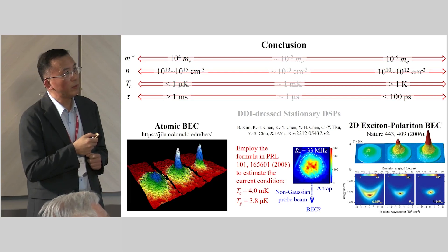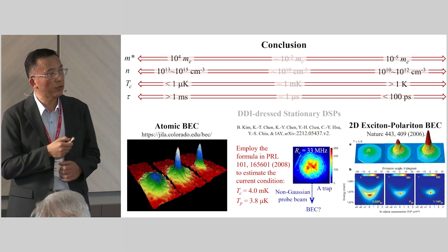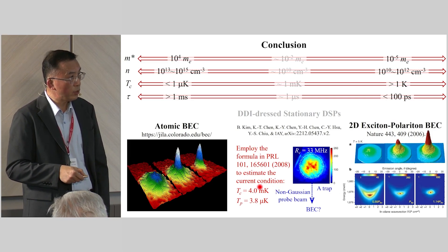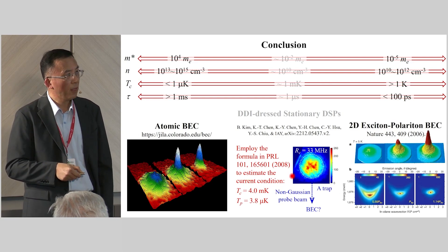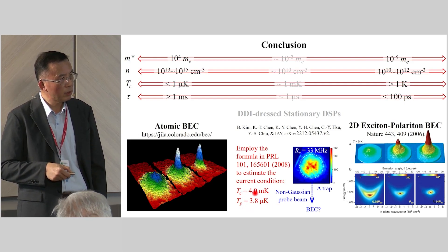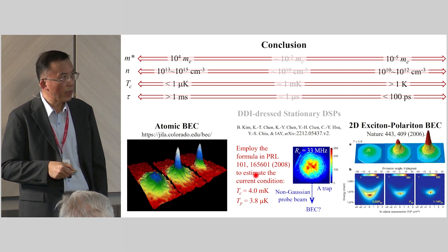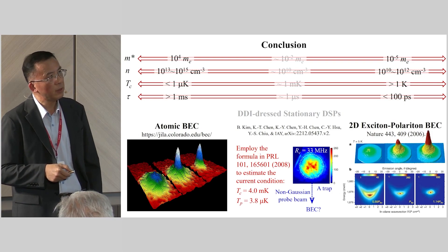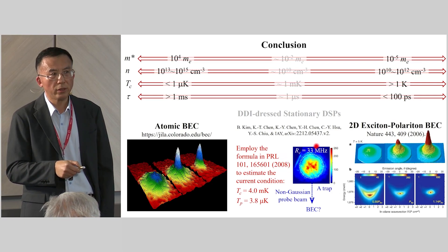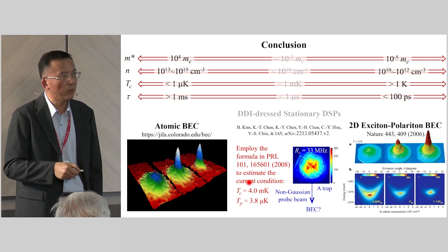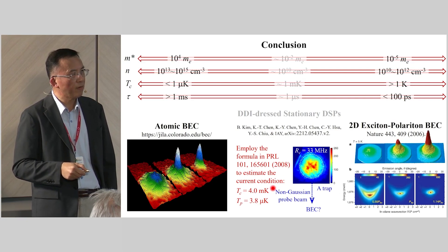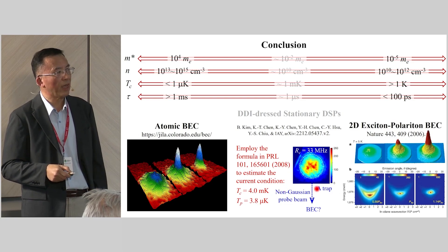Okay, conclusion. We estimate the present experimental conditions as the following. The transition temperature is about 4 millikelvin and the temperature of our stationary dark state polariton is about 4 millikelvin, obtained by the formula in this paper. According to the phase shift measurement, we estimate the collision rate is about 33 megahertz. I think our system is ready for the search for the BEC. However, we still have a few things to do before we can really test whether we can have a BEC or not.